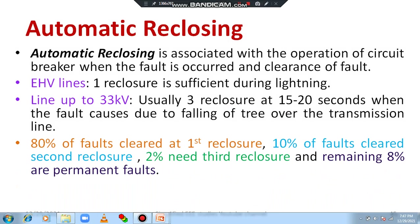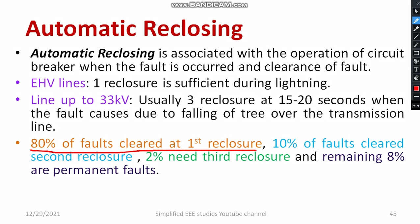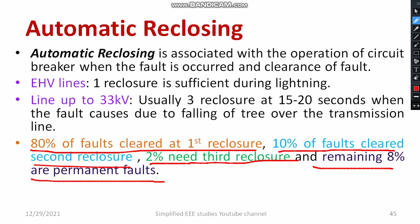Now let us understand the strategies for automatic re-closure, considering different timing. In general, 80% of the faults are cleared on the first re-closure — that is what exactly happens in the case of extra high voltage lines. Another 10% of the faults will be cleared on the second re-closure. Then 2% need a third re-closure, and the remaining 8% are called permanent faults.